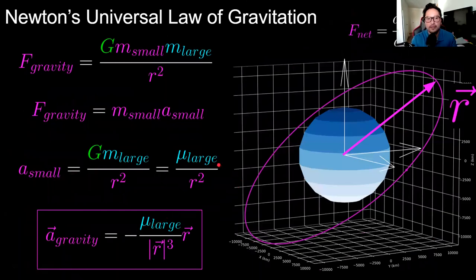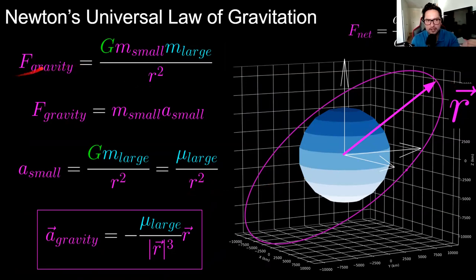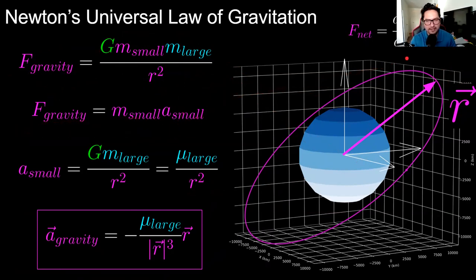From these assumptions we get Newton's universal law of gravitation, which states that the acceleration due to gravity follows a 1/r² relationship, where r is the distance from the center of the inertial frame to the spacecraft. In scalar form: F = G·m₁·m₂/r². Combined with Newton's second law (net force equals time derivative of momentum), assuming constant spacecraft mass, we get F = ma.